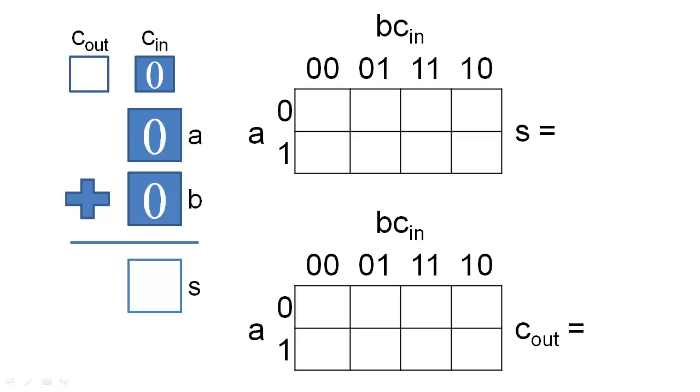The sum and the carry out in this case are zero. If we change C-in to be one, we find a new sum and carry. Actually, we find the same combination of sum and carry outputs as long as only one of A, B, or C-in is one.